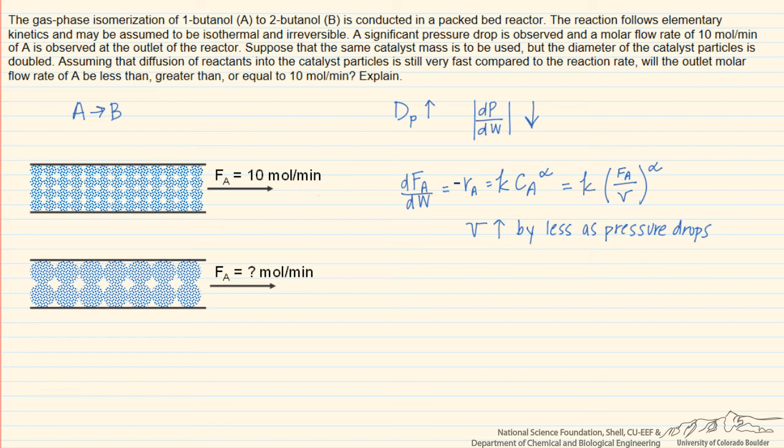And so then F A will be less than 10 moles per minute, will in other words have larger conversion because we will have reduced pressure drop, and that means that we won't increase the volumetric flow rate as much so that we can have a higher reaction rate in the reactor due to that higher concentration of A.